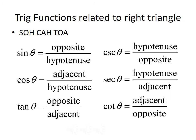We also have the trigonometric functions cosecant, which is the reciprocal of sine, so that's hypotenuse over opposite. Secant, which is the reciprocal of cosine, is hypotenuse over adjacent. And cotangent, the reciprocal of tangent, is adjacent over opposite.